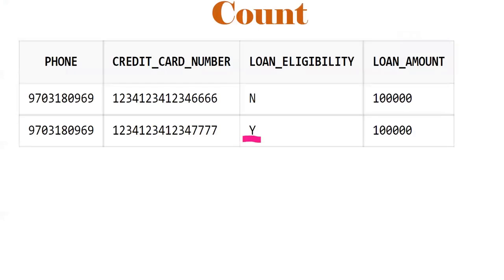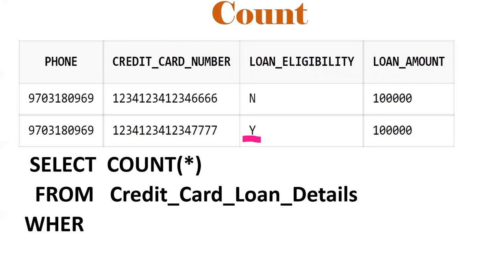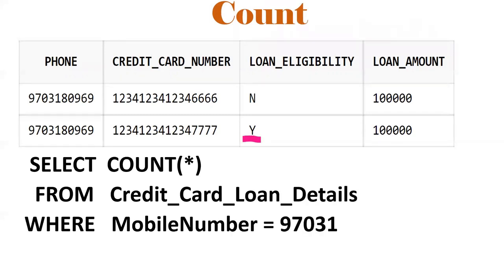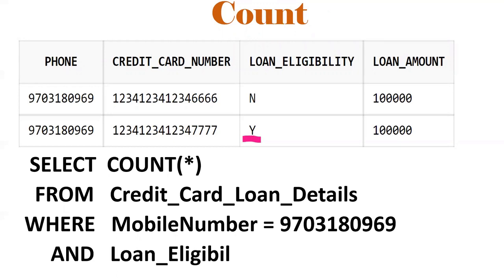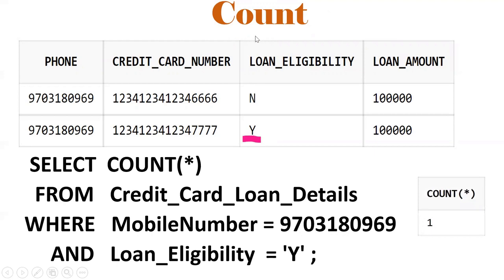COUNT is an aggregate function. For example, with a table named credit_card_loan_details, if you filter with WHERE mobile_number = '97...', two records will come. If you add another condition — AND loan_eligibility = 'Y' — only one record will come. This is how COUNT as an aggregate function is used to count the number of matching records.